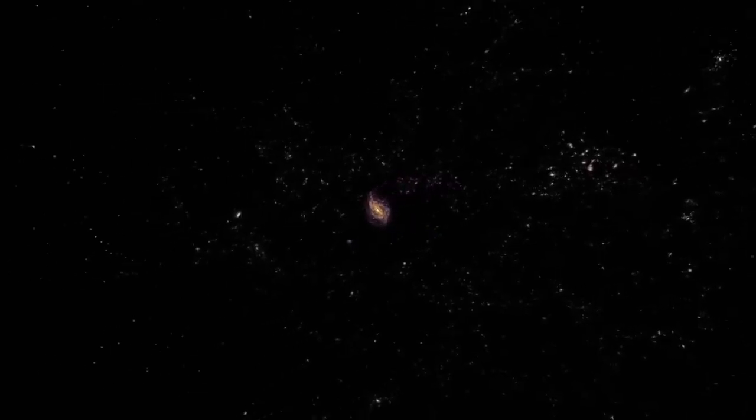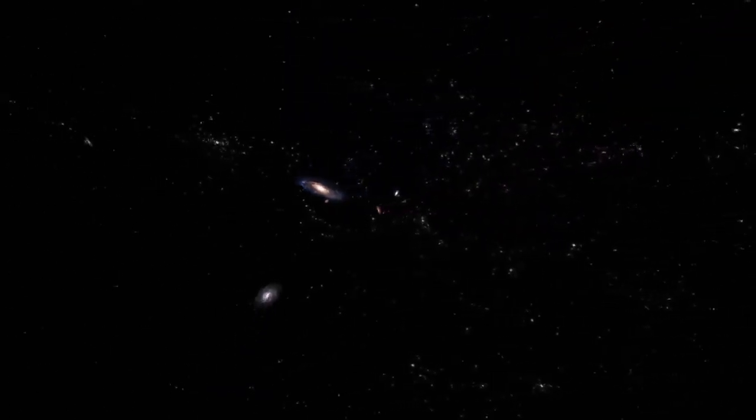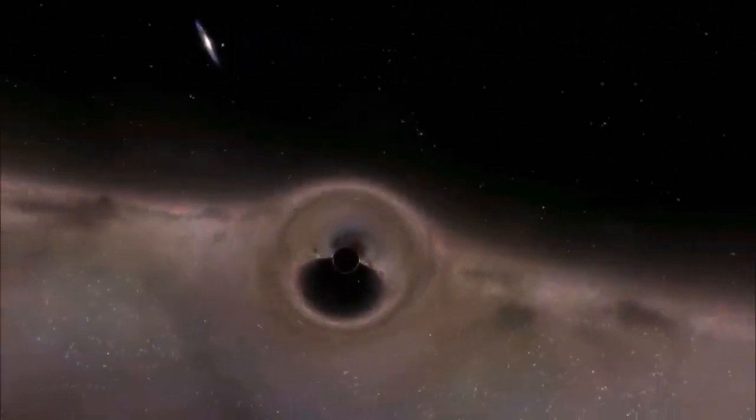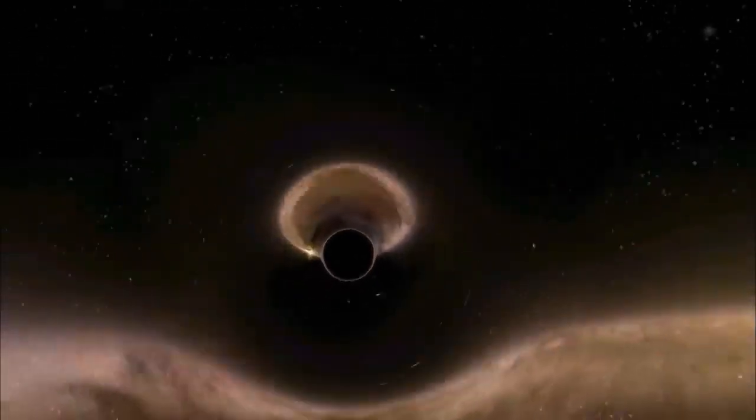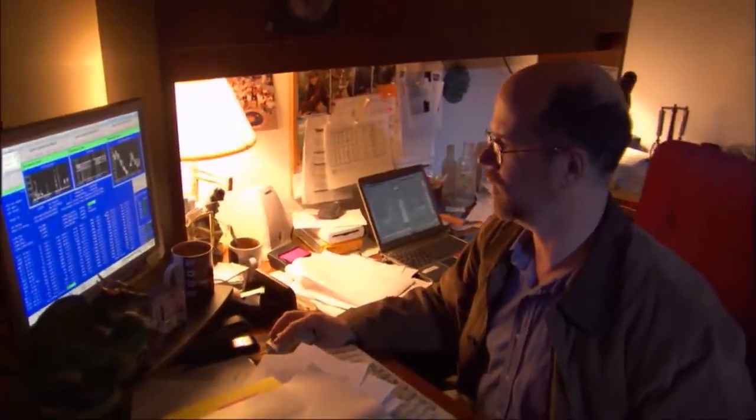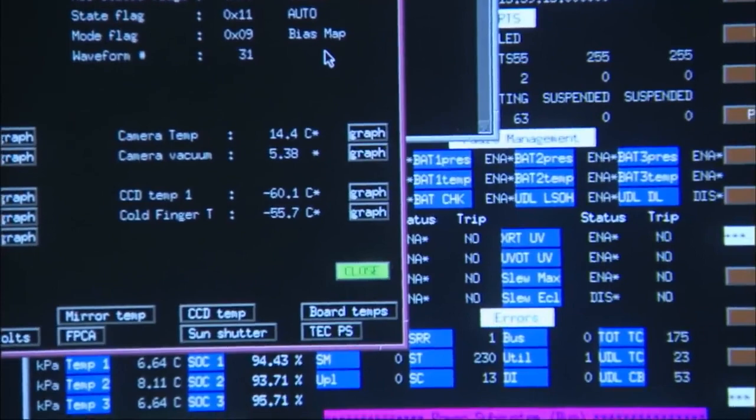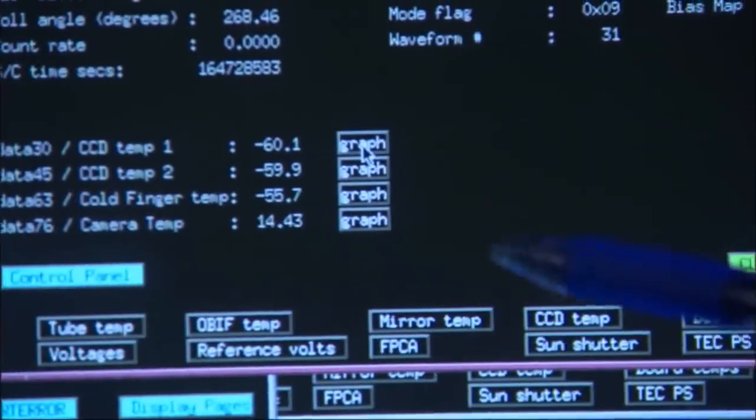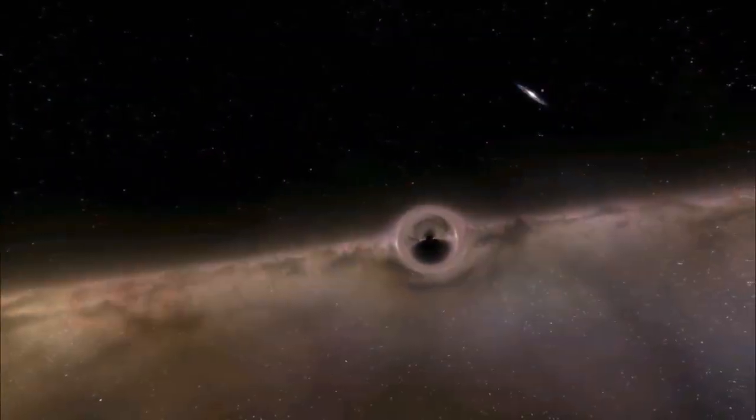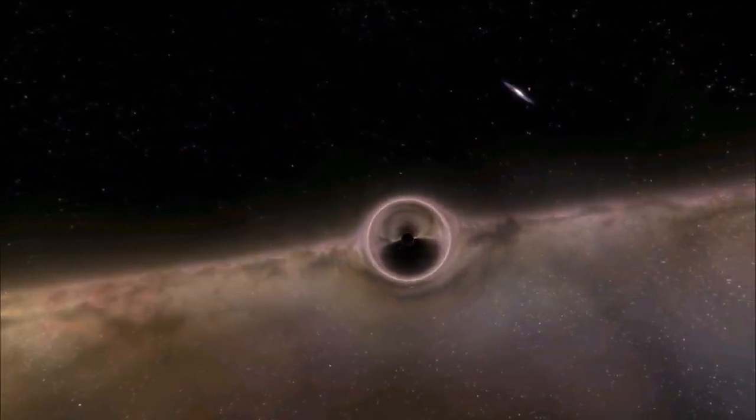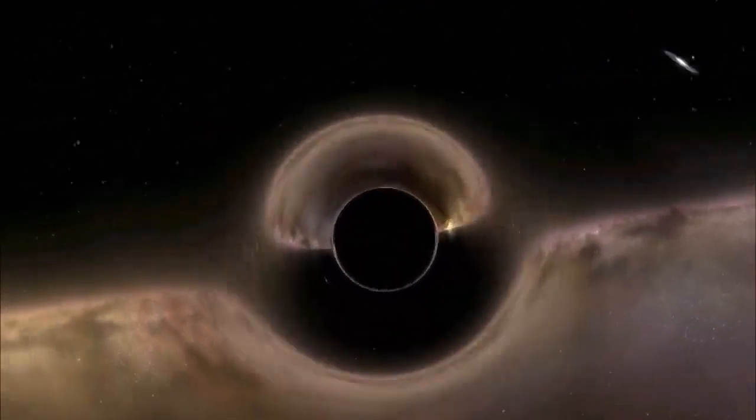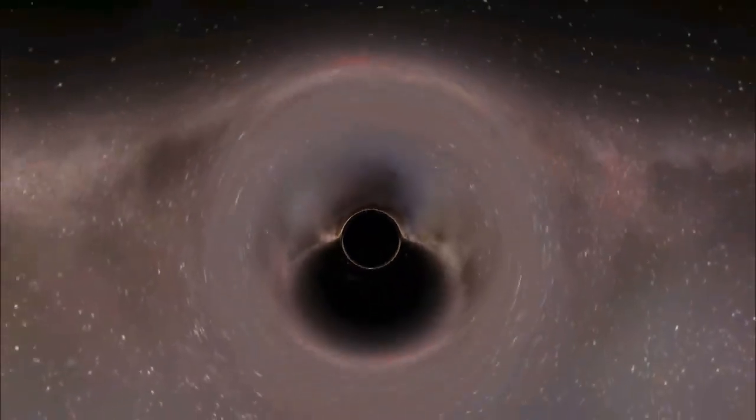In nearly every large galaxy, astronomers have found evidence of black holes, millions, even billions of times the mass of the sun. How did they form? And how did they get so large? In the search for answers, we are beginning to glimpse the forces that shape the stars, planets, even life. And now, by tracing the life cycle of black holes, scientists are finding clues to the fate that awaits our galaxy and the universe at large.